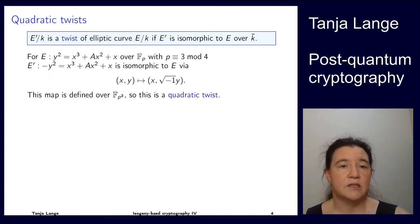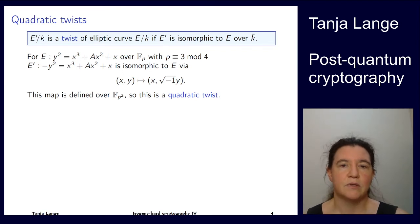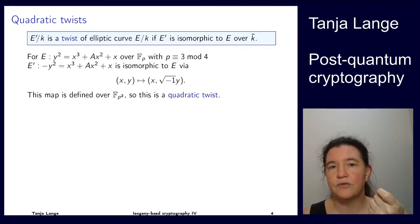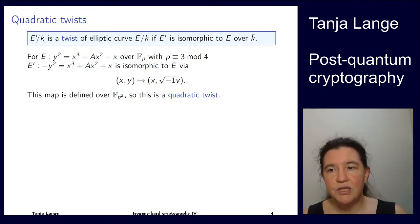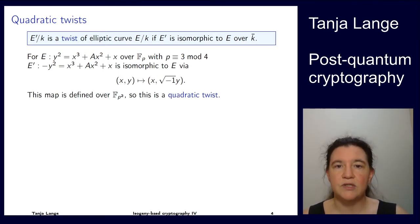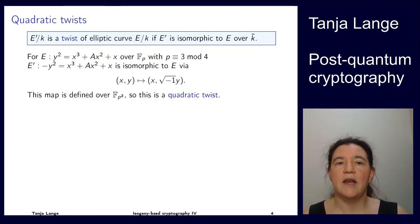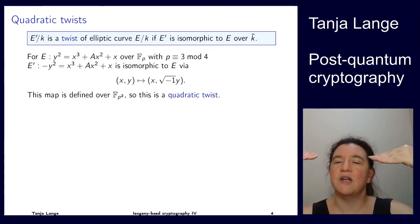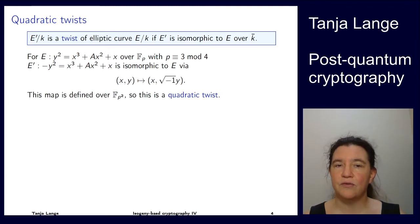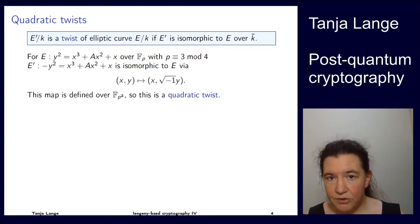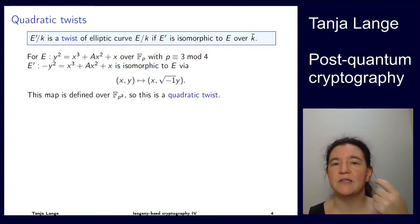Another thing we need is the notion of a quadratic twist. We have already seen isomorphisms of curves — maps from one curve to another with no exceptions, so isogenies allow exceptions while isomorphisms have kernel just being the neutral element. A twist of a curve is a curve which is isomorphic to the original curve, but over an algebraic closure. So E is defined over k, E prime is also defined over k, but the isomorphism is not necessarily defined over k — it's defined over some extension.